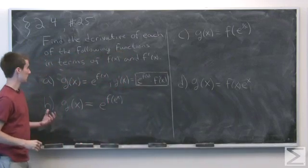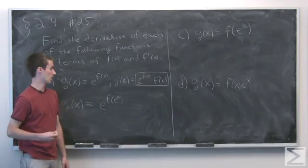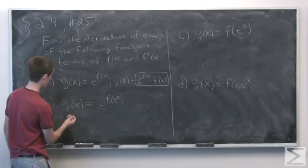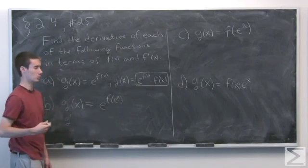Part b is similar, except now instead of f of x, we have f of e of x. This is going to be the same strategy. We'll apply the same strategy to solve this problem, but we'll need to apply the chain rule twice, actually.